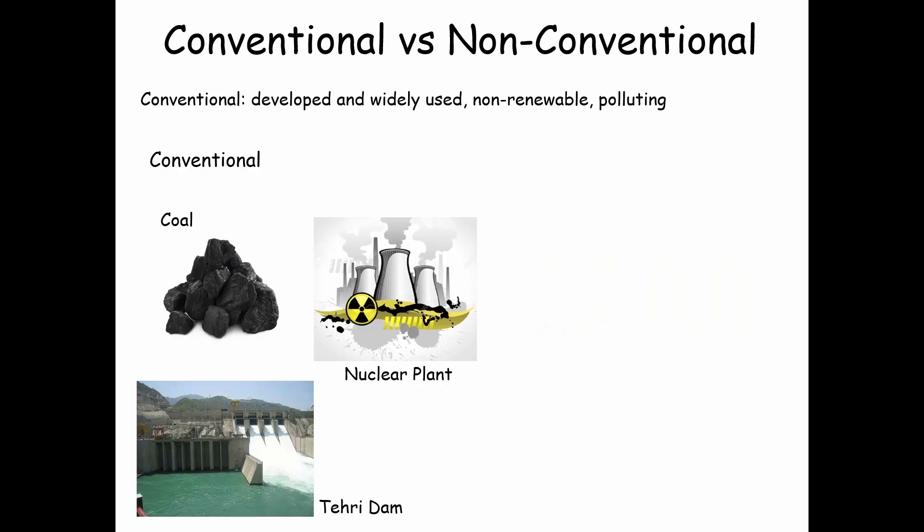Broadly speaking, there are two categories of sources of energy: conventional and non-conventional. Conventional is well-developed and widely used. Typically, they are non-renewable and polluting. For example, thermal power, which uses coal; nuclear power, which makes use of uranium; and hydroelectricity. Out of these, hydroelectricity is renewable, so that is somewhat like an exception.